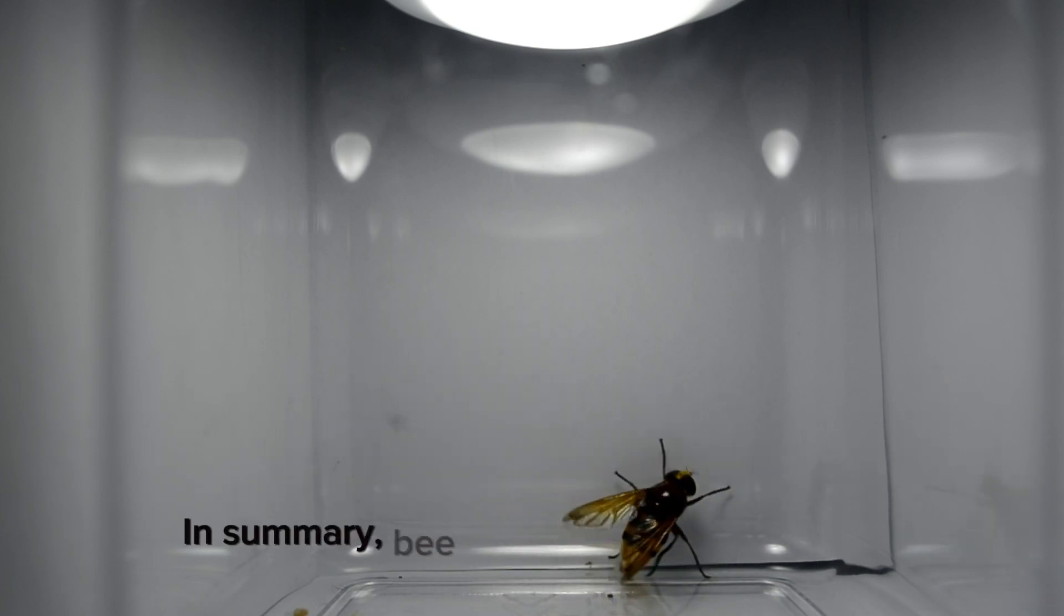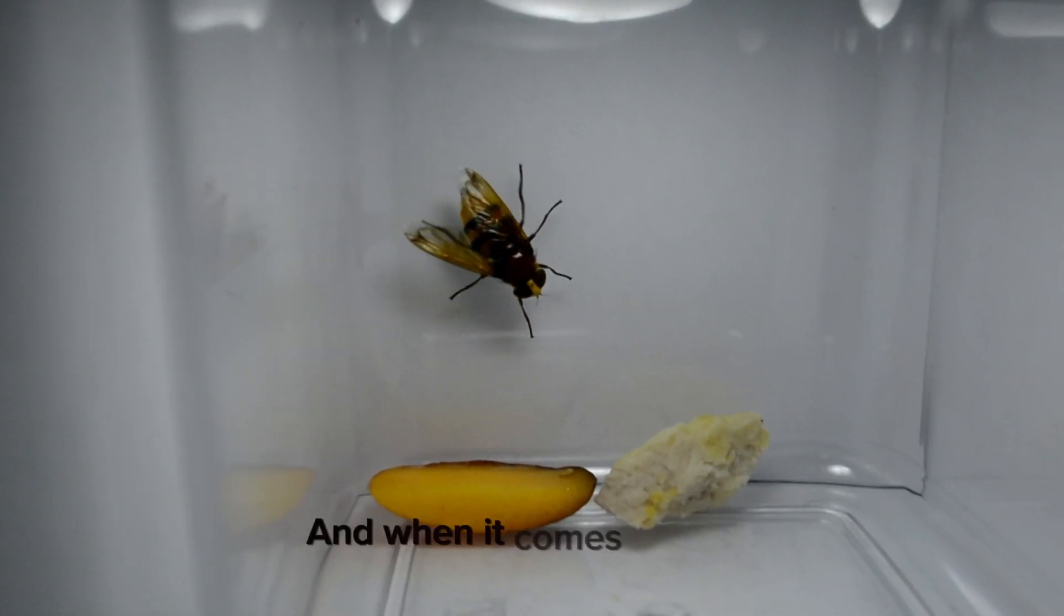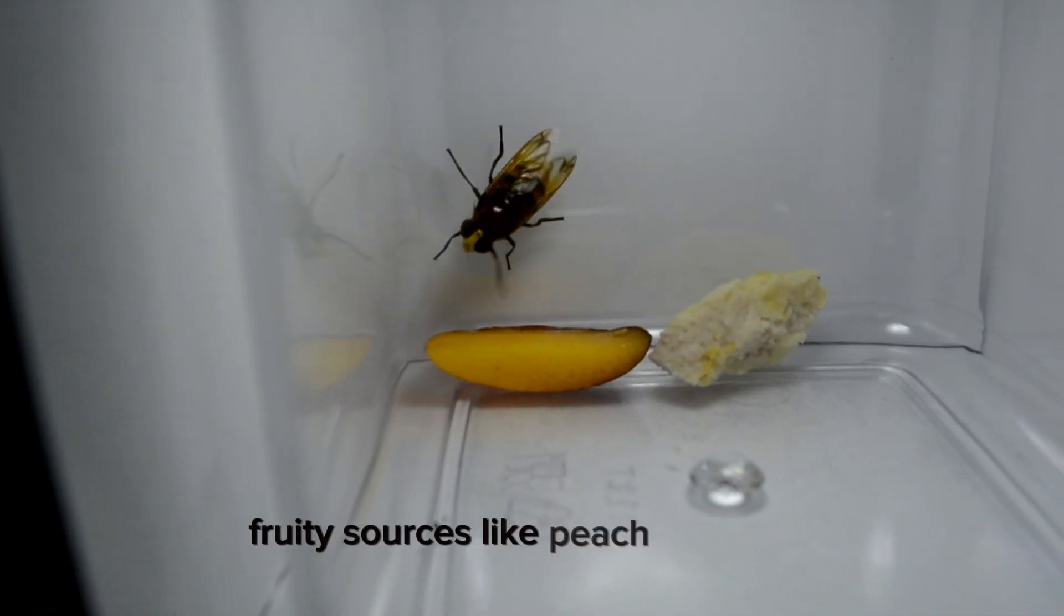In summary, bee flies are sensitive to light, with green light boosting their activity. And when it comes to food, they favor sweet, fruity sources like peach or nectar.